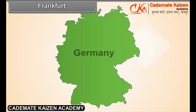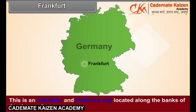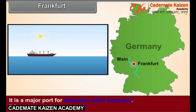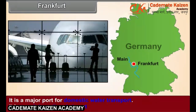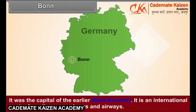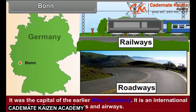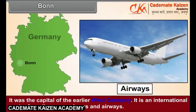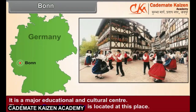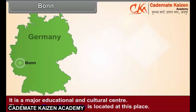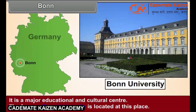Frankfurt: This is an industrial and historical city located along the banks of the river Main. It is a major port for domestic water transport. It has an international airport. It was a capital of the earlier West Germany. It is an international center for railways, roadways, and airways, and a major educational and cultural center. The famous Bonn University is located at this place.